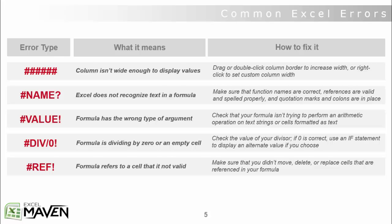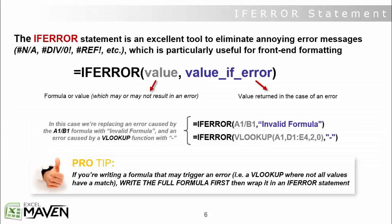So those are five common types of errors. Let's jump into the IFERROR statement, which is a personal favorite function of mine. It's a really great tool to eliminate annoying error messages — your DIV/ZEROs, your NAs, your REFs — which can be really useful for front-end formatting. The most common application is that if you're sharing something like a dashboard or presentation with colleagues or clients and you want to polish it up, you can use IFERROR to customize those error messages to something a little less in your face.